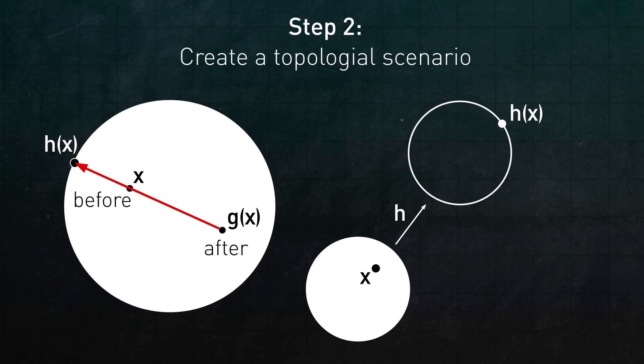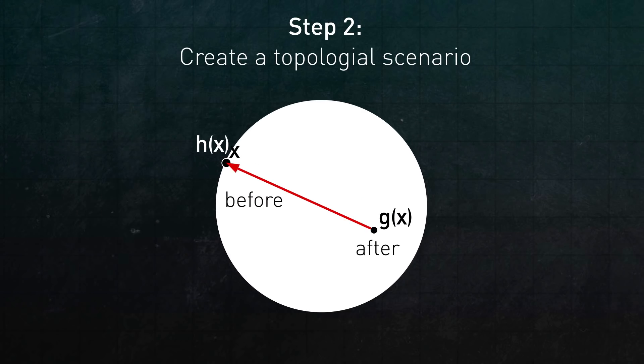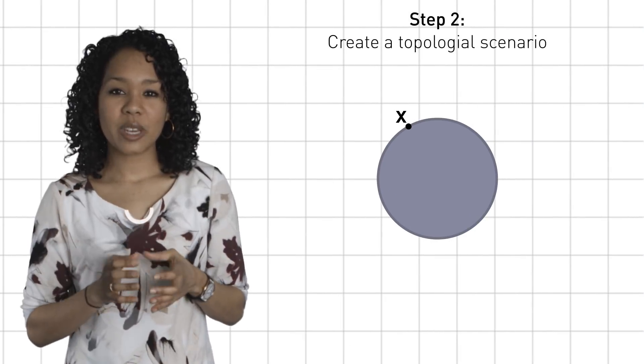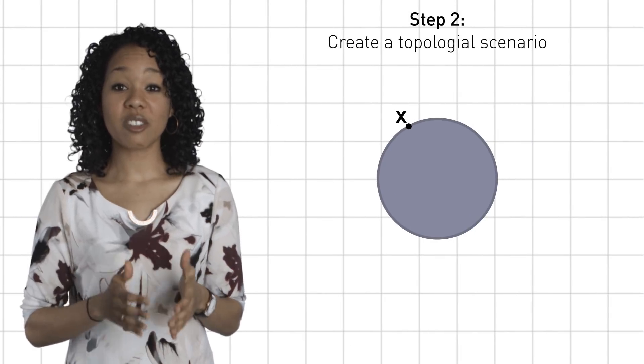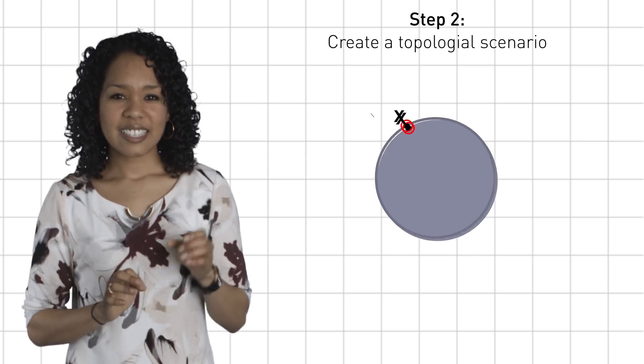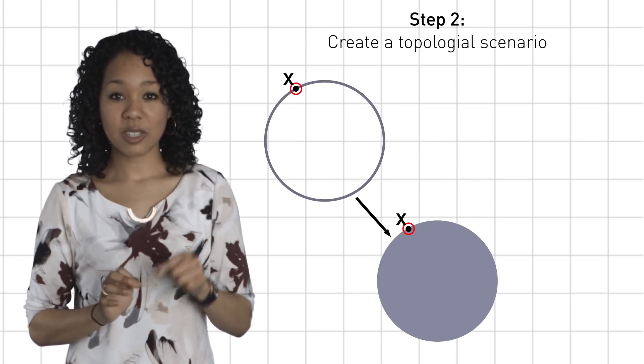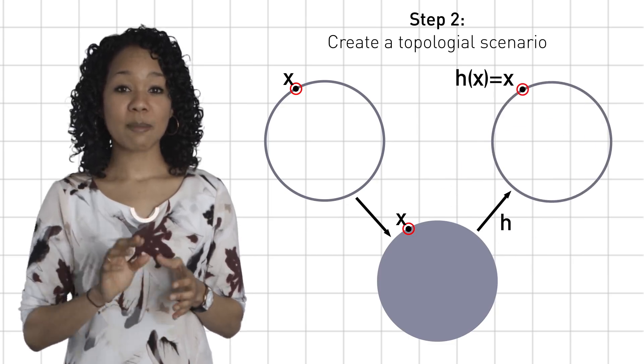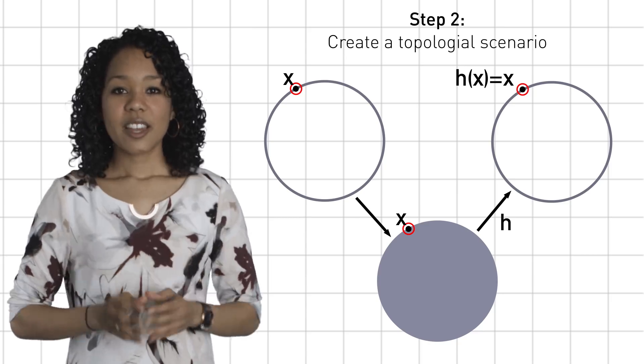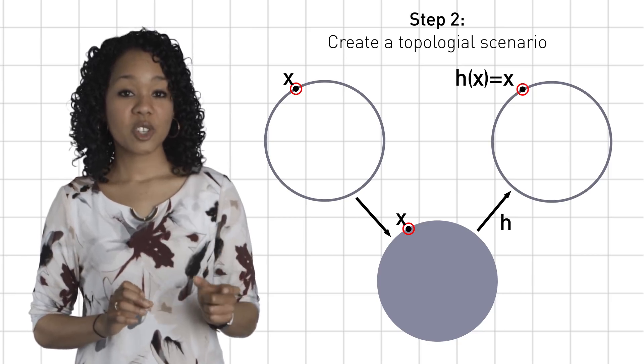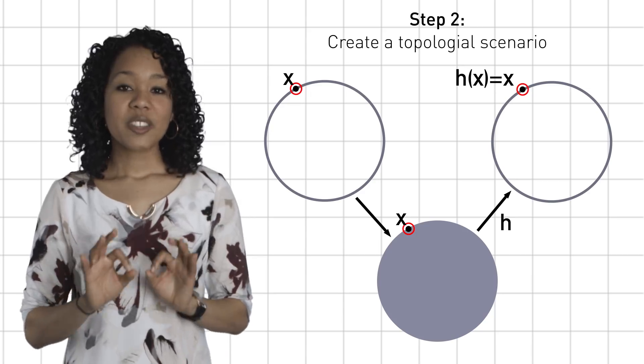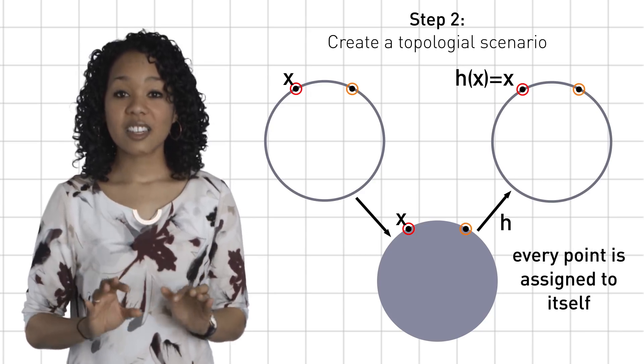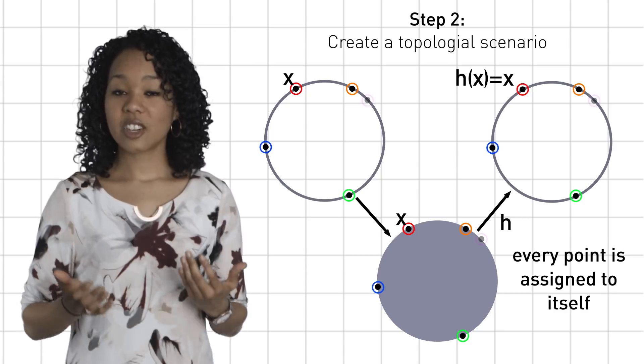To every point x in the disk, h assigns a point h(x) on the boundary circle. And notice, if x is already on the circle, then h(x) = x. Now what happens if we compose the function h with another function? Start with the boring function that assigns a point on the boundary circle to itself, then undo the process. That is, send that point back to itself, this time using the new function h. This composition defines a function from the circle to the circle with the special feature that every point is assigned to itself. This is our topological scenario.